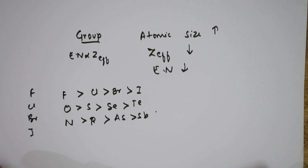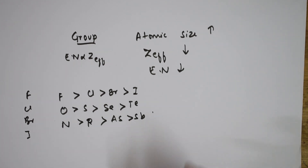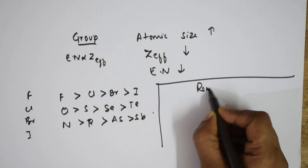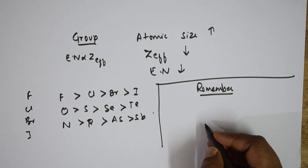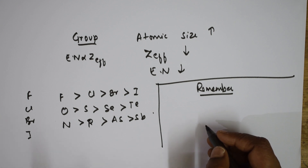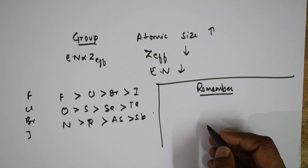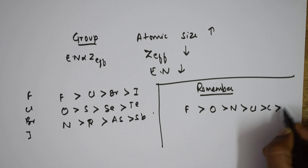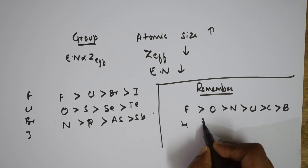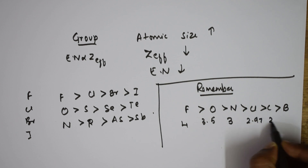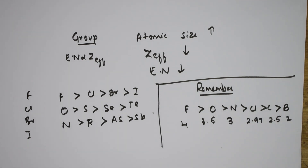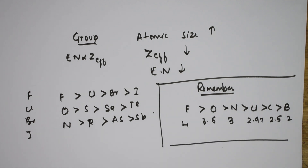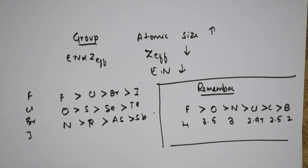The most important thing to remember in electronegativity: all metalloids have nearly the same value of electronegativity, approximately 2. Also remember these key electronegativity values: F = 4, O = 3.5, N = 3, Cl = 2.97, C = 2.5, and B = 2. Most exam questions are asked from these values.